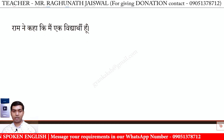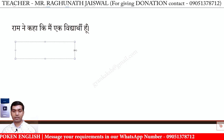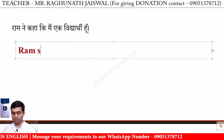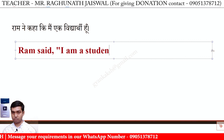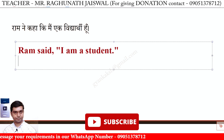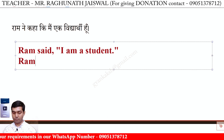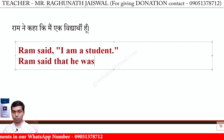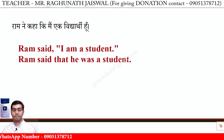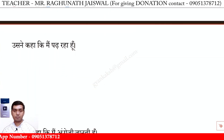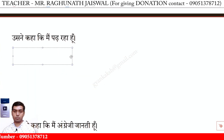Ram ne kaha ki mein ek vidyaarthi hoon. Direct: Ram said, 'I am a student.' Indirect: Ram said that he was a student. Next — us ne kaha ki mein padh raha hoon.